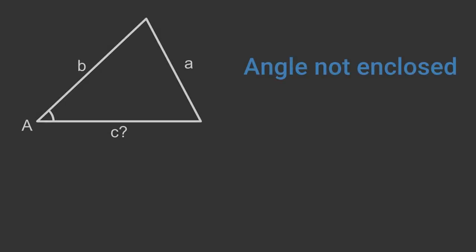In the case where we know two sides and an angle, but the angle isn't enclosed, we can't solve the triangle. It is interesting to understand why this is. In this case we know angle A and sides a and b, but we want to find side c. Angle A is not enclosed by sides a and b. Why isn't this possible?